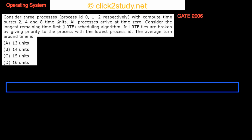Consider three processes with process IDs 0, 1, and 2 respectively, with compute time bursts of 2, 4, and 8 time units. These are the time bursts of these processes. All processes arrive at time 0.